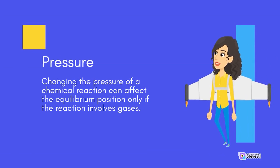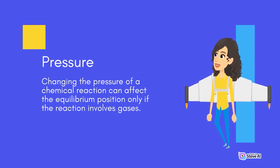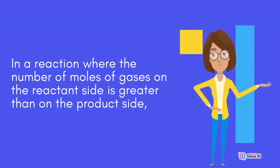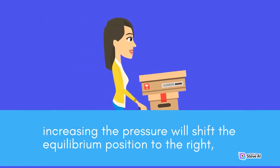Changing the pressure of a chemical reaction can affect the equilibrium position only if the reaction involves gases. In a reaction where the number of moles of gases on the reactant side is greater than on the product side, increasing the pressure will shift the equilibrium position to the right, favoring the side with fewer moles of gases.